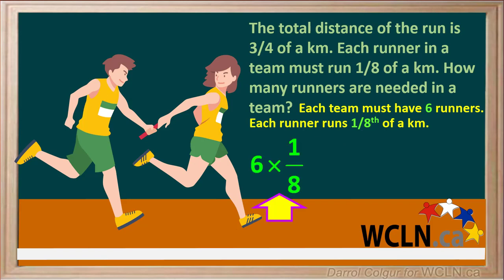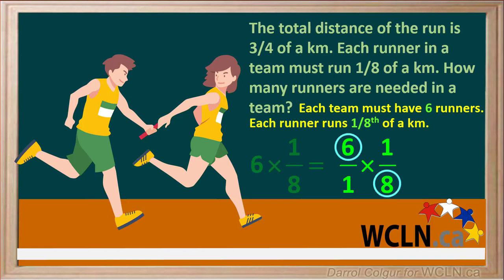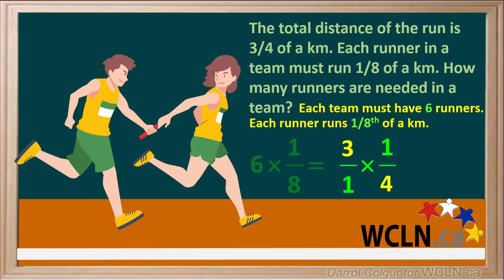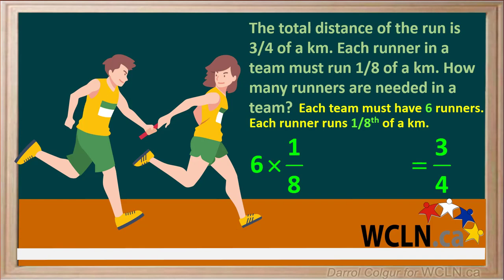the total distance covered by 6 runners is 6 times 1 eighth, which is the same as 6 over 1 times 1 over 8. Notice that 6 and 8 can both be divided by 2. Dividing 6 by 2 gives us 3, and dividing 8 by 2 gives us 4. So we're left with multiplying the fractions 3 over 1 times 1 over 4, which is equal to 3 quarters. So 6 runners running 1 eighth of a kilometer each will run a total of 3 quarters of a kilometer. And the total distance of the run is 3 quarters of a kilometer, so 6 runners per team is just right.